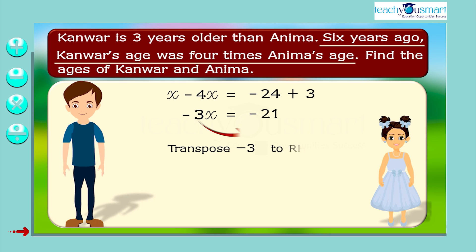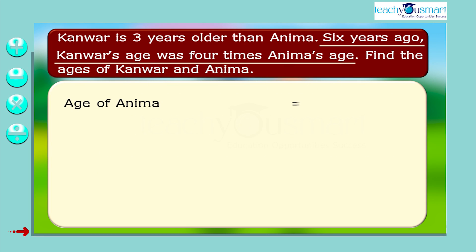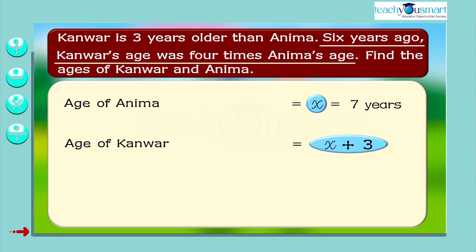Transposing minus three to RHS, X equals minus 21 by minus three, that is X equals seven. We have to find the present ages of Kunwa and Anima. Age of Anima equals X equals seven years. And the age of Kunwa equals X plus three equals seven plus three equals ten years.